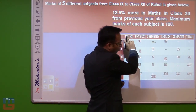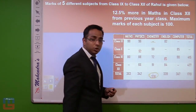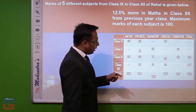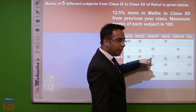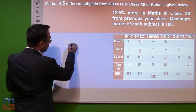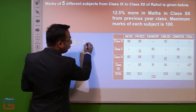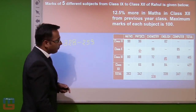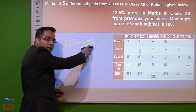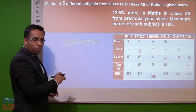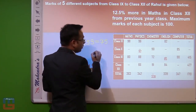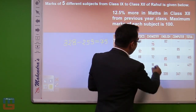Now since we already calculated the chemistry total as 328, we can find chemistry class 9. We sum the known chemistry values: 90 plus 90 is 180, plus 70 is 250, plus 3 gives 253. Then 328 minus 253: the difference from 300 is 47 and from 253 it is 28; 28 plus 47 gives 75. So chemistry marks in class 9 are 75.